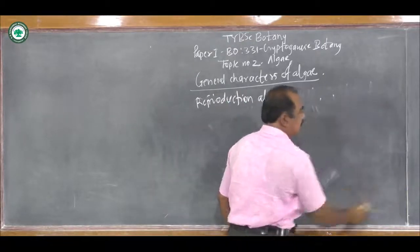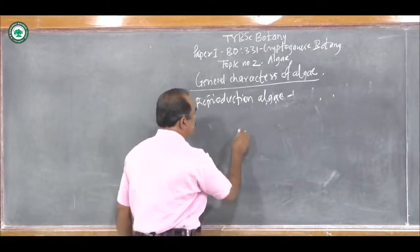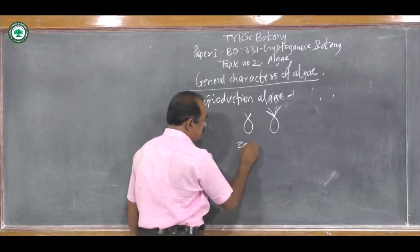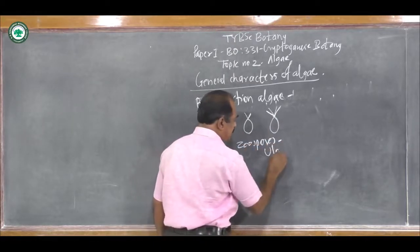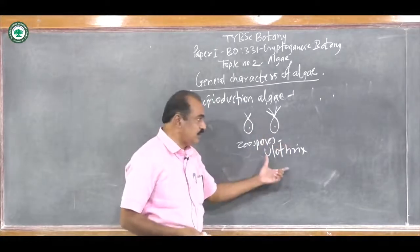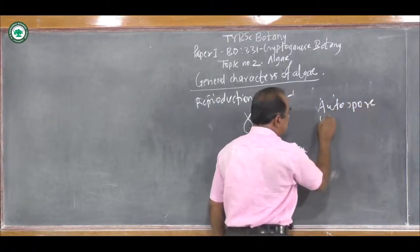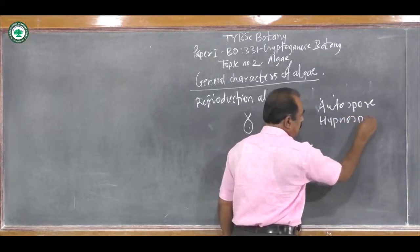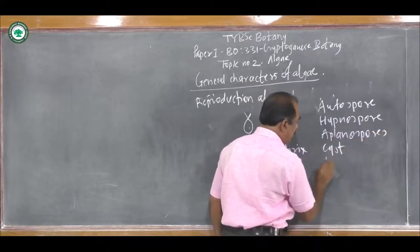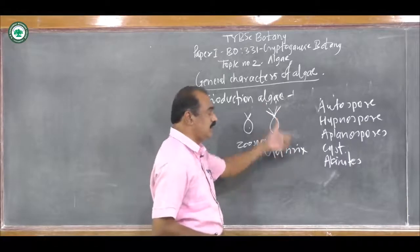Second is Asexual Reproduction. In Algae, Asexual Reproduction takes place with the help of different types of spores. For example, Zoospores. These Zoospores are found in Ulothrix, and have the capacity to develop into a new thallus. There are other different types as well: Autospore, Hypnospore, Aplanospore, Cyst, and Akinetes. These are different types of Asexual Spores which are important for Asexual Reproduction.